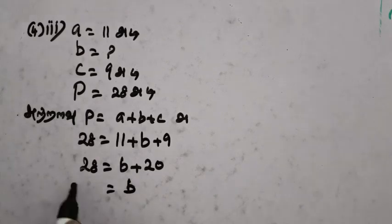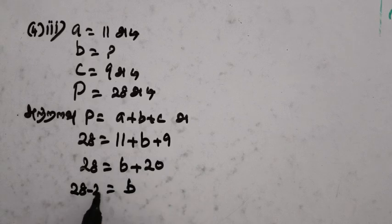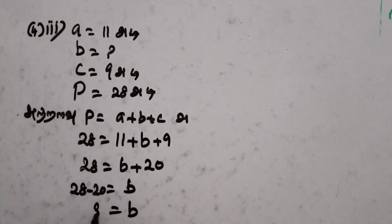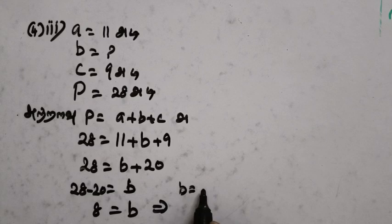Then there is a followers. This is 28. If you have 20, you will have 20. Then 28 is 28. B is 28. So B is 28. Now, this is the same thing.